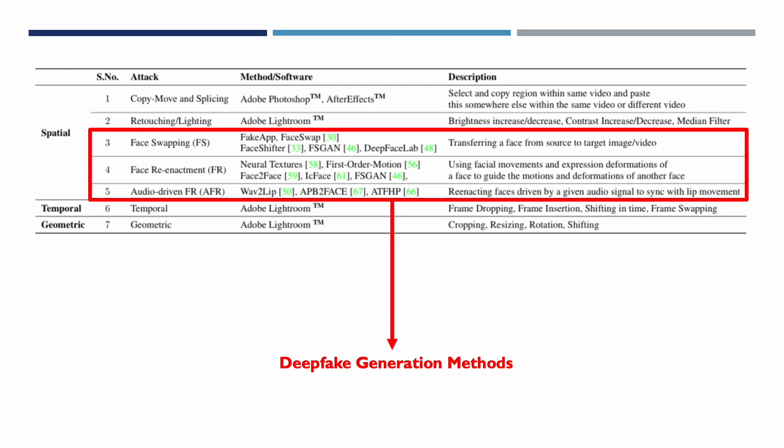More recently, people have used AI to alter facial features to create deep fake videos. AI-based techniques comprise two major attack approaches: face swapping and face reenactment. Face swapping switches the subject's face with the face of another person, and face reenactment alters the subject's facial expressions based on another face.